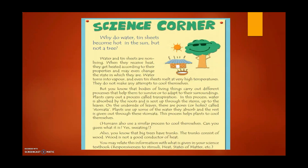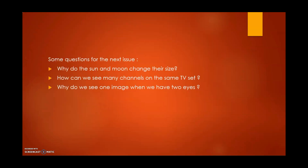The next column is Science Corner — a very fun way of understanding science. Here the topic was: why do water and tin sheets become hot in the sun but not a tree? They explained how a tree is a living thing while tin and water are not, and that is the reason they change their state. Some other questions we can ask for this kind of Science Corner: why do the sun and the moon change their size? How can we see many channels on the same TV set? Why do we see one image when we have two eyes? Interesting questions! We would really love to see the answers and explanations.